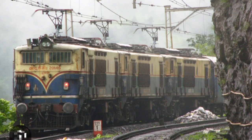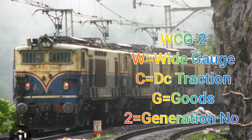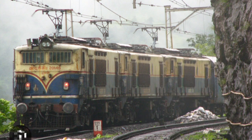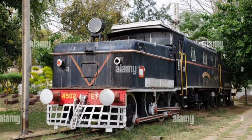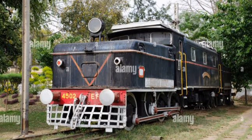Next, coming to the DC traction goods type. First comes WCG2: here W denotes wide gauge, C denotes DC traction, G for goods, and 2 is the generation number. There is one old loco, WCG1, which used to run in the 20th century in India.